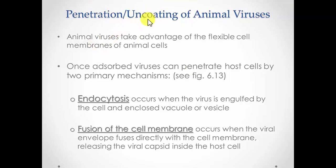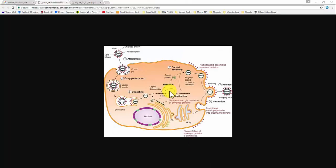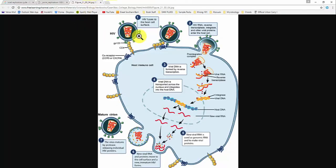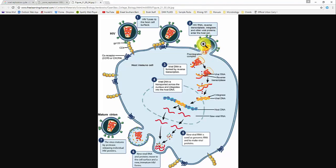When it comes to getting inside the cell, we call this penetration. Here's a figure of the HIV virus showing the overall cycle. It shows HIV attaching, then starting to come into the cell, which is the penetration stage. In this case, the virus is fusing with the cell. This is an envelope virus, so the envelope merges with the cell membrane, releasing the capsid held inside the envelope into the cell.